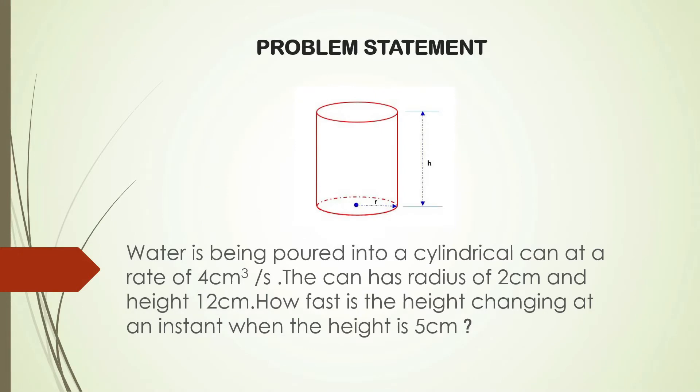Water is being poured into a cylindrical can at a rate of 4 cm³ per second. The can has radius of 2 cm and height 12 cm. How fast is the height changing at an instant when the height is 5 cm?